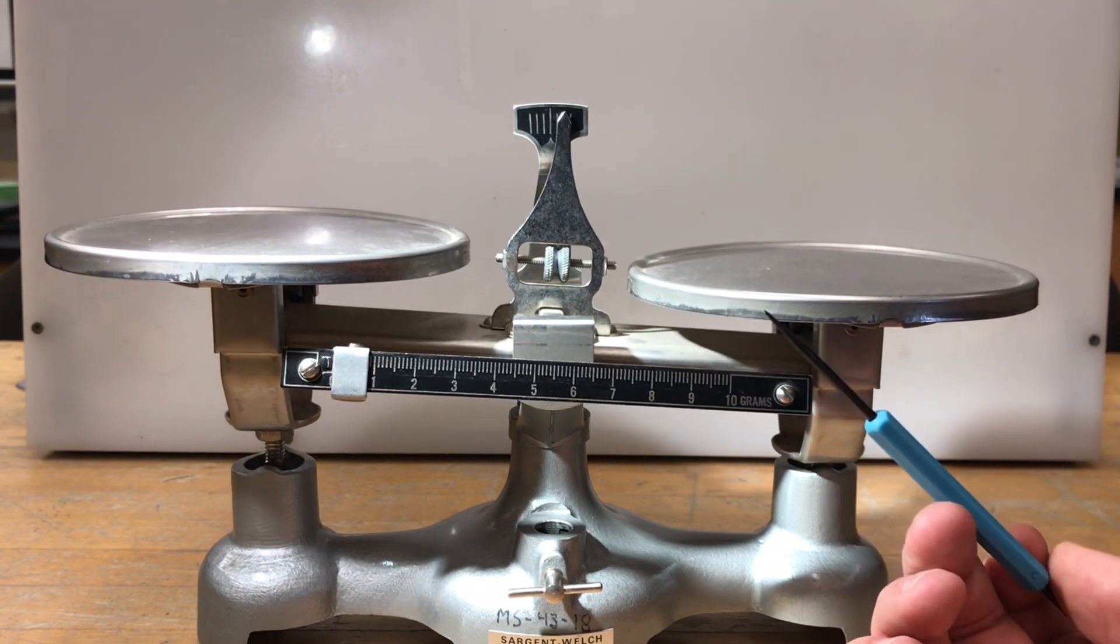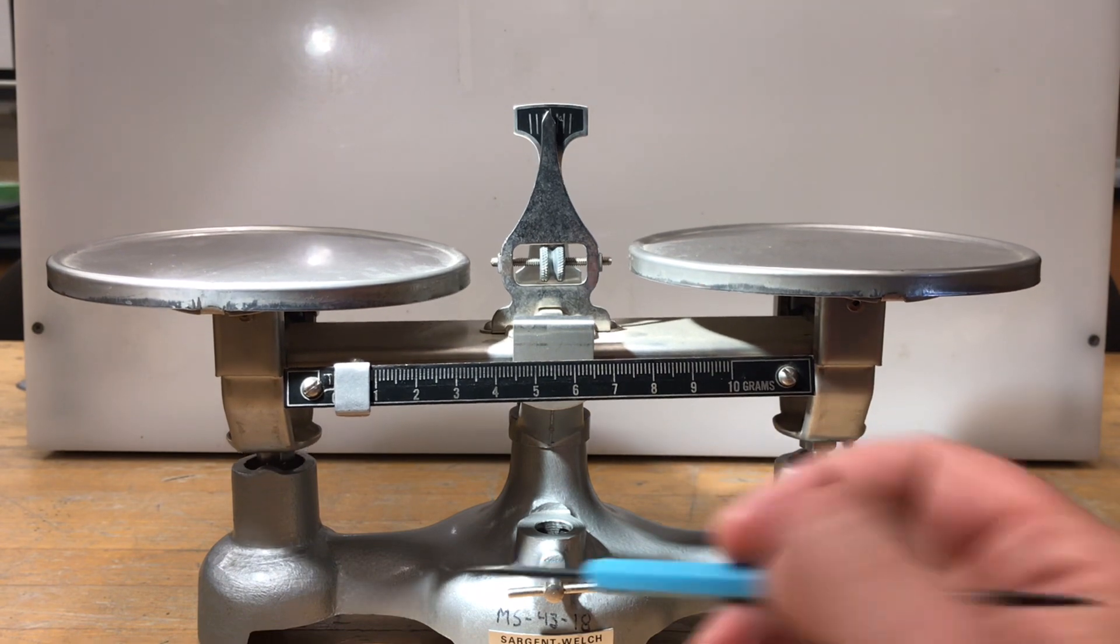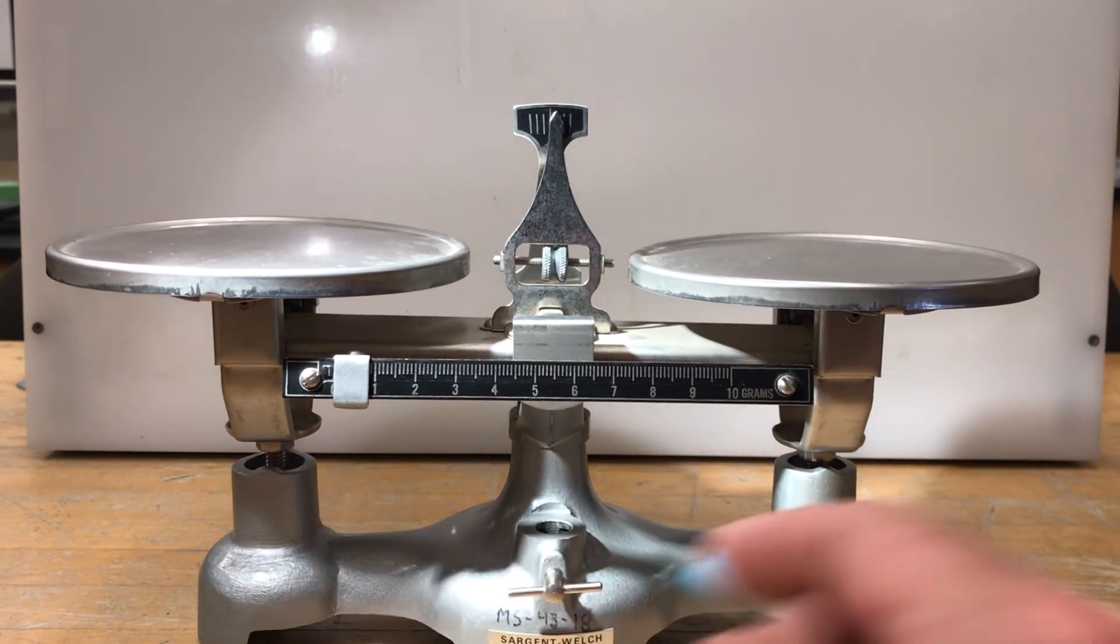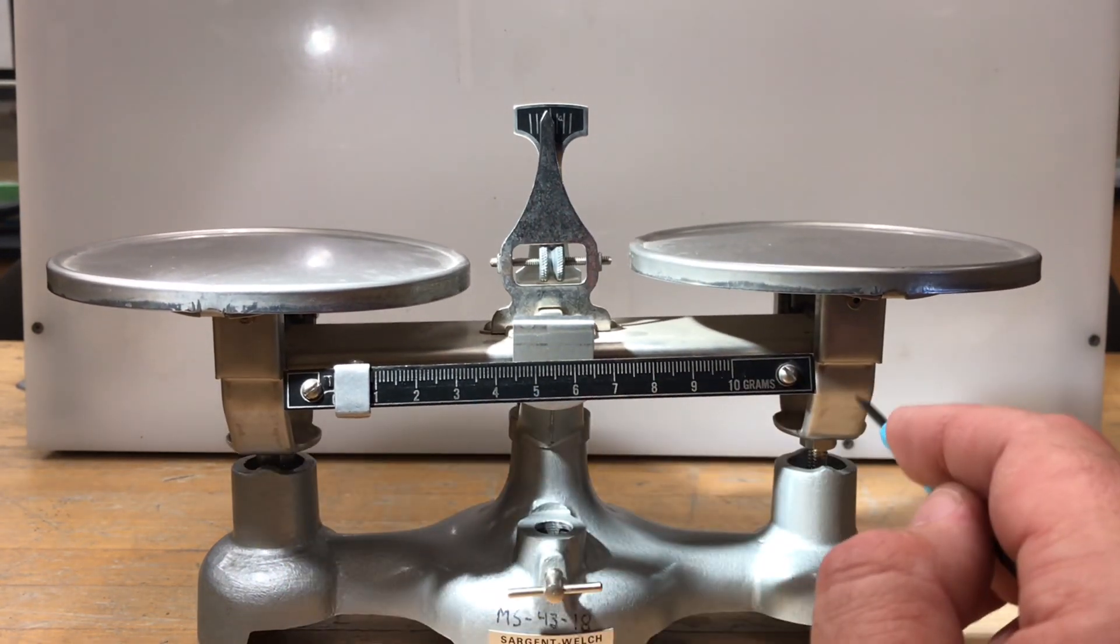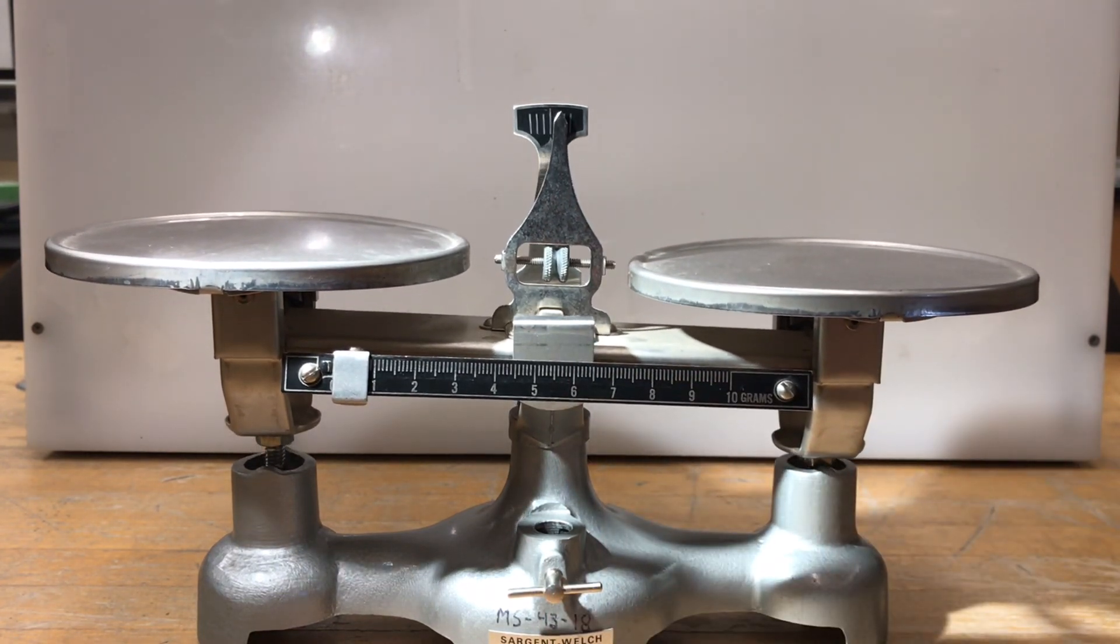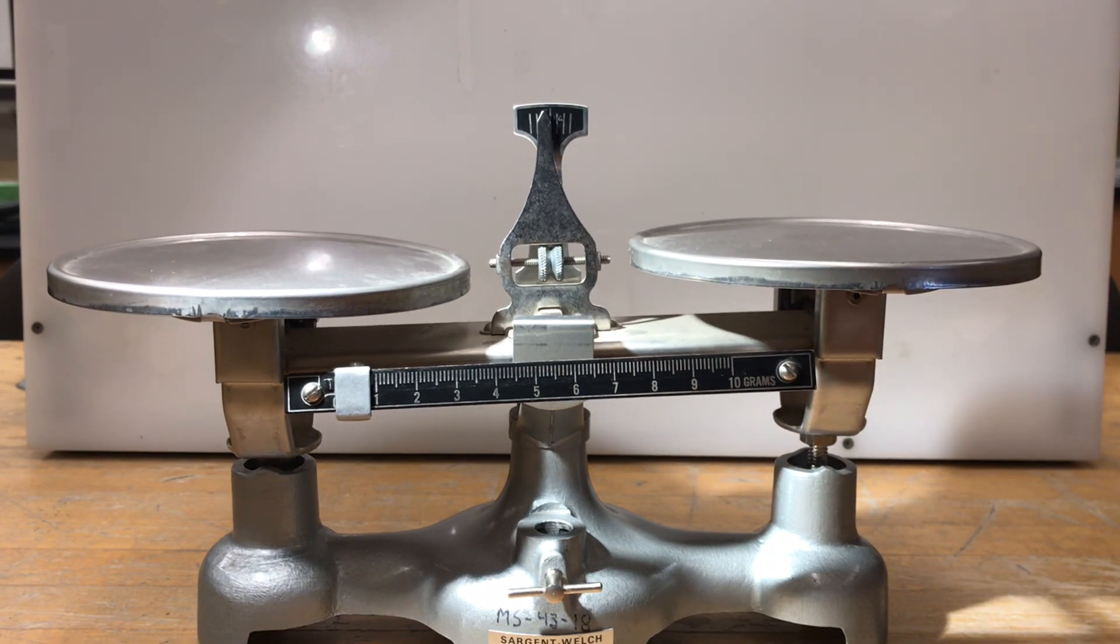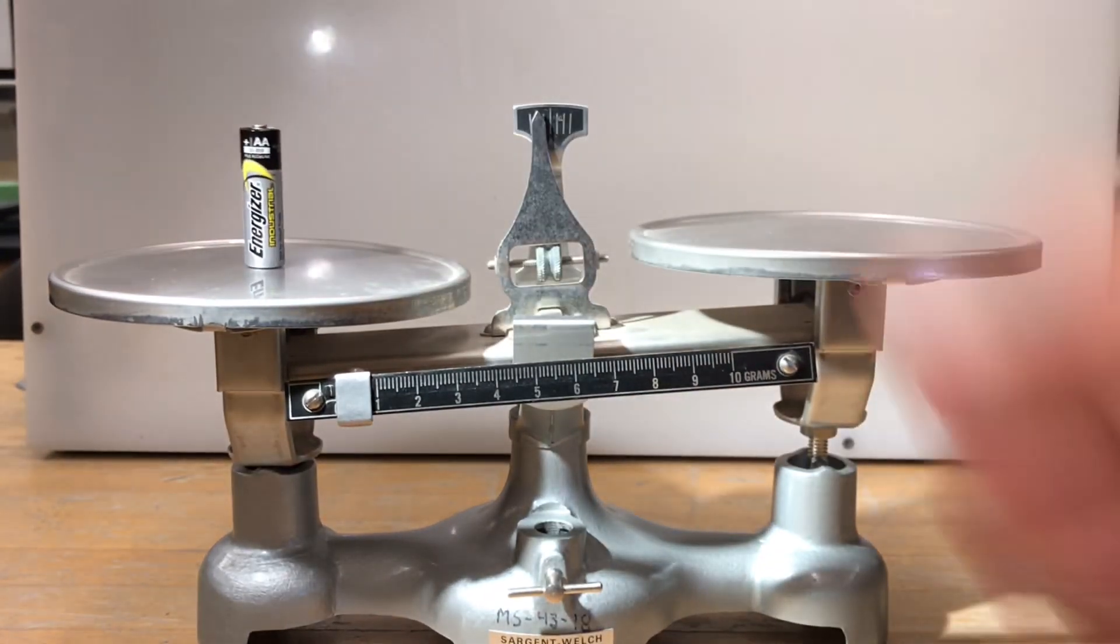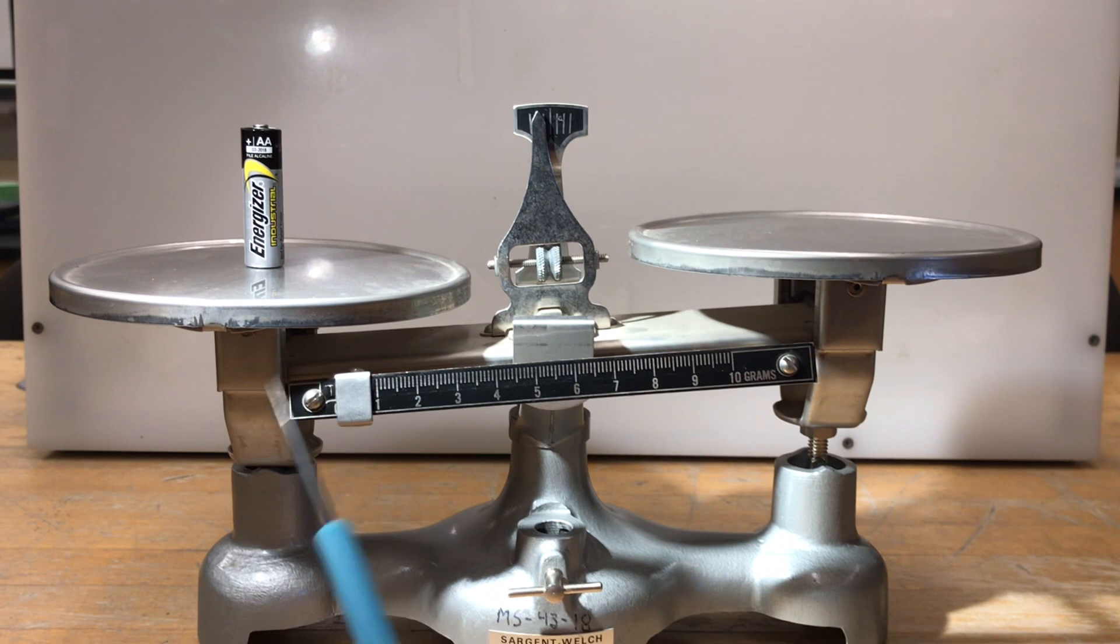You might recognize this as a torque balance. Each of the pans is attached to the central bar at the same distance from the pivot. So if you want to measure the weight of something, you can take your unknown object, put it on one side, and obviously that side goes down.